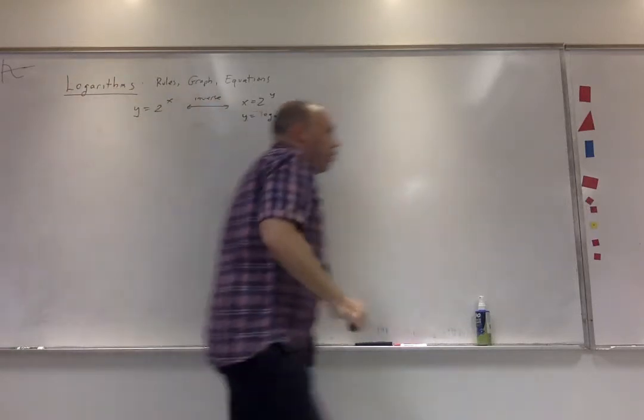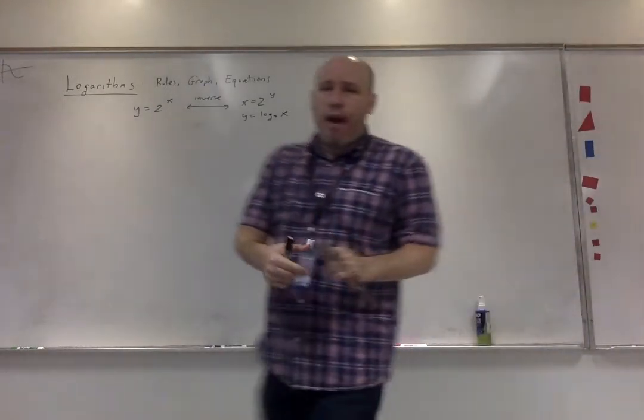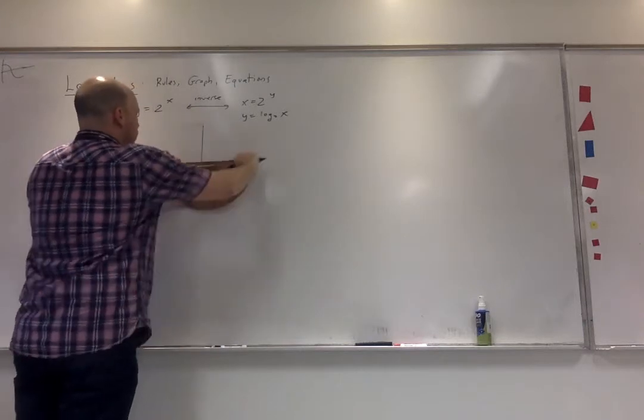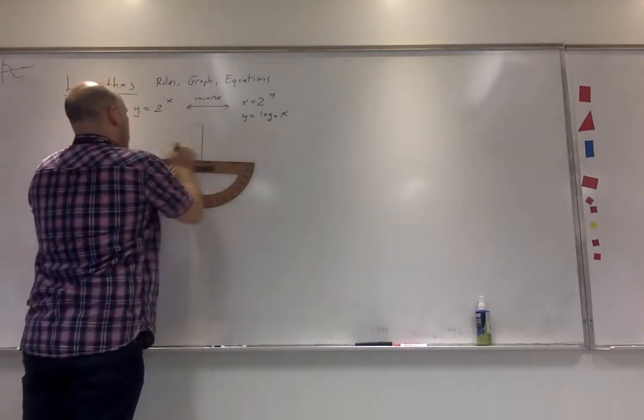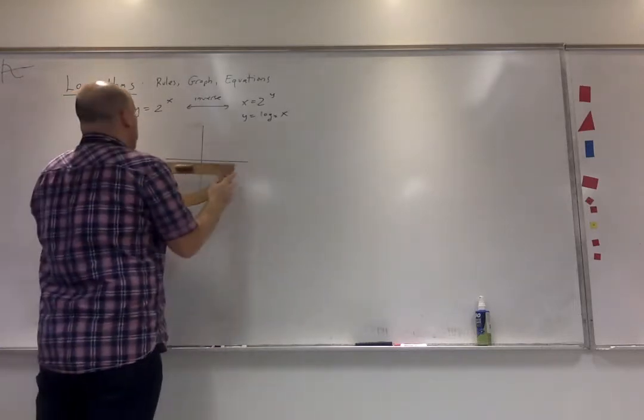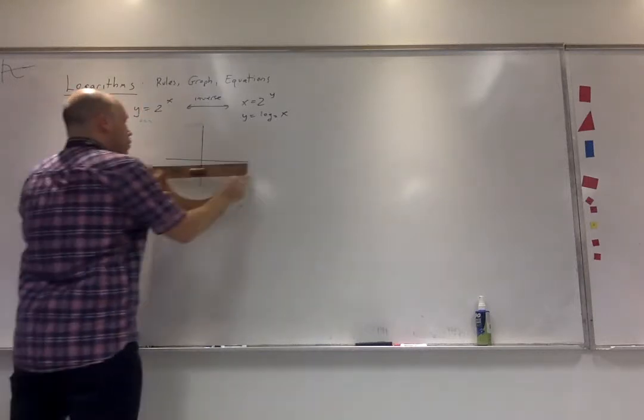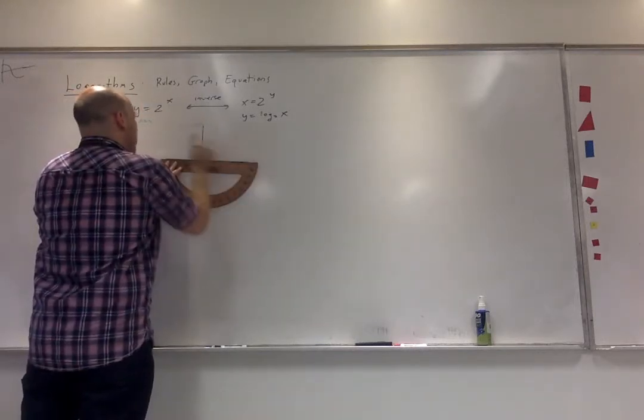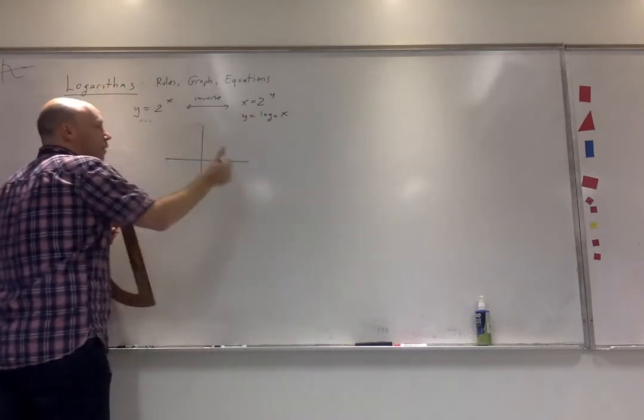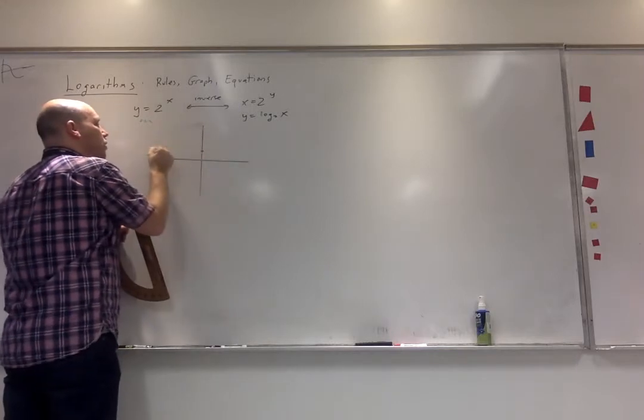So we can from that figure out what the log graph looks like. I can make my own graph, make a sketch here. I know that I have an asymptote here. Let's use green. We know that we have an asymptote, and we know that the graph passes through 0, 1, and so it looks something like this.